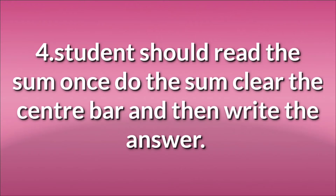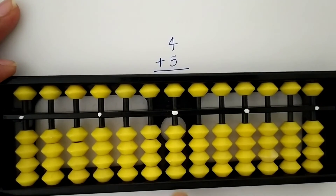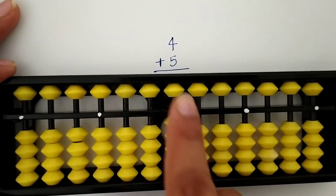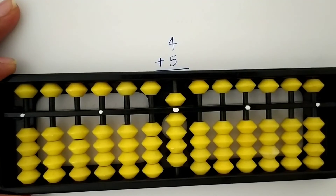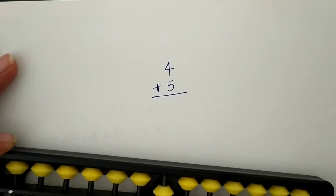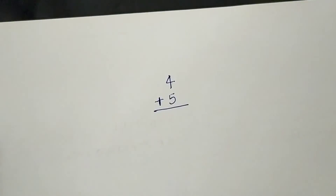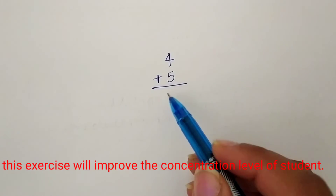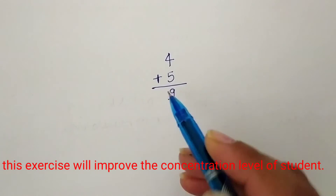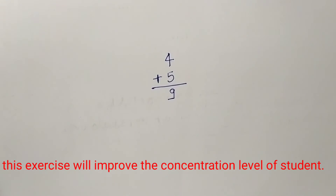The fourth course instruction is that students should read the sum once, do the sum, clear the center bar, and then write the answer. In this video, you will see we do the sum 4 plus 5, then clear the abacus, and then write the answer. This exercise will improve the concentration level of the student.